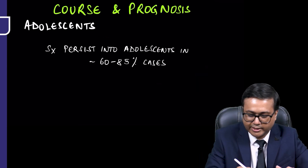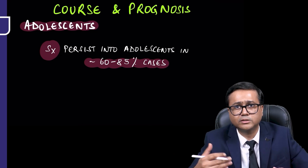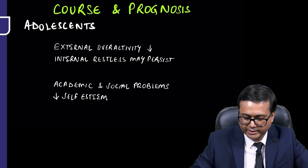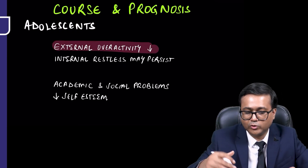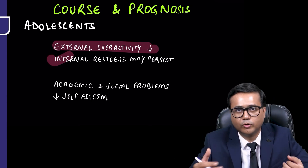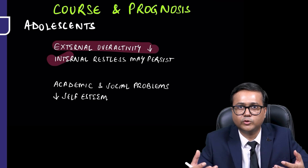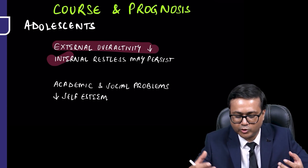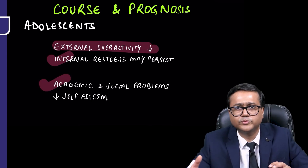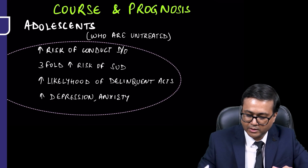When the child reaches adolescence, symptoms may persist in 60 to 85 percent of cases. In a minority, symptoms may start resolving. Typically, external overactivity or hyperactivity may decrease, but internal restlessness continues to persist. Hyperactivity may be less obvious, so always take a good history and interview the child properly. The child may continue to have academic and social problems along with decreased self-esteem.